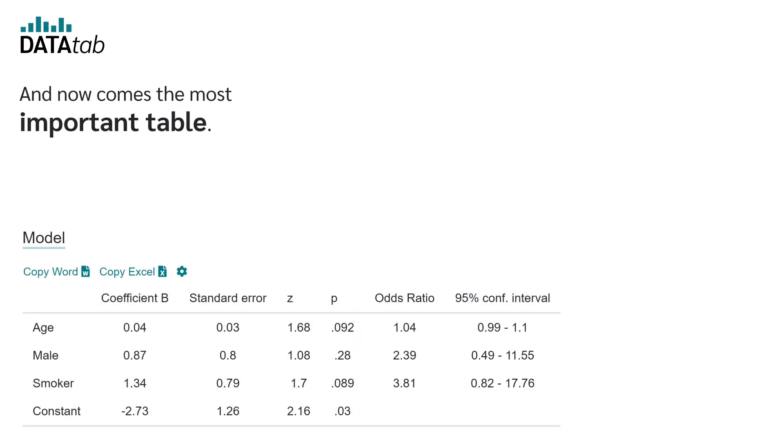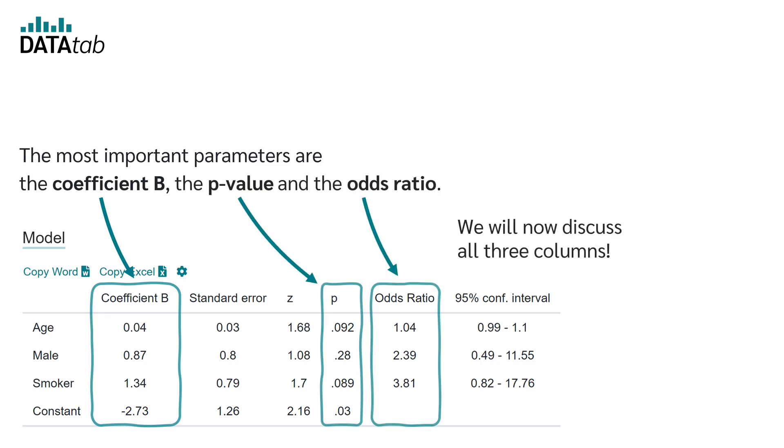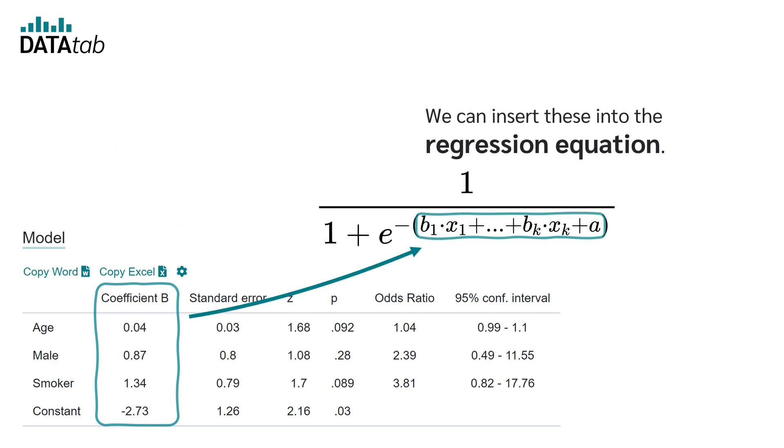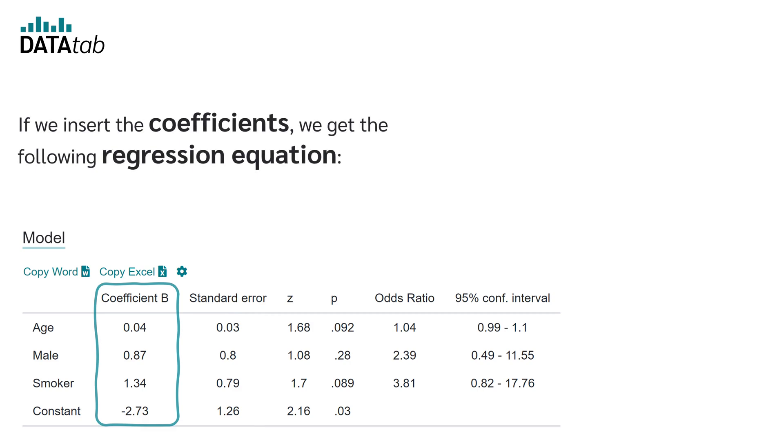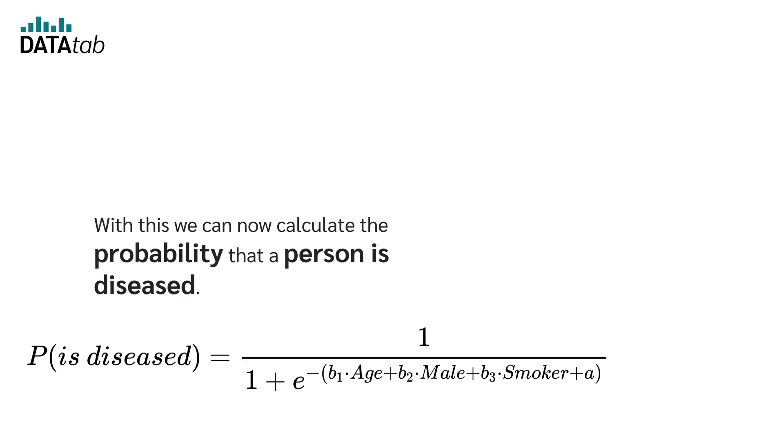And now comes the most important table, the table with the model coefficients. The most important parameters are the coefficient b, the p-value and the odds ratio. We will now discuss all three columns. In the first column, we can read the calculated coefficients from our model. We can insert these into the regression equation. If we insert the coefficients, we get the following regression equation: 0.04, 0.87, 1.34, -2.73. With this, we can now calculate the probability that the person is diseased.